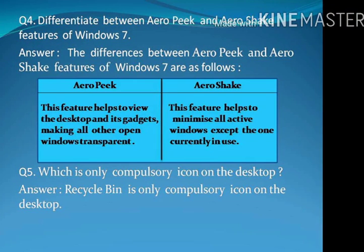Question number 4: Differentiate between Arrow Peak and Arrow Shake features of Windows 7. Answer: The differences are as follows. Arrow Peak: This feature helps to view the desktop and its gadgets, making all other open windows transparent. Arrow Shake: This feature helps to minimize all active windows except the one currently in use.